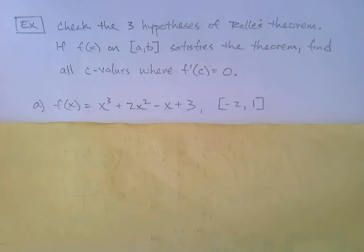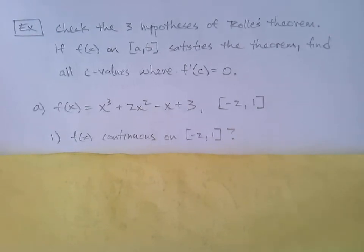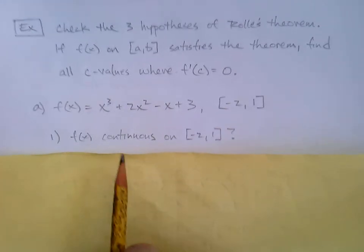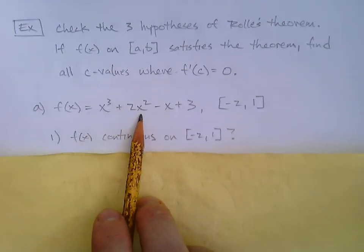Check the three hypotheses of Rolle's theorem. If f(x) on the interval from a to b satisfies the theorem, then find all c values where f'(c) equals zero. So we're going to go through. We're going to be given a function and an interval. And we're just going to confirm that those three hypotheses are true.